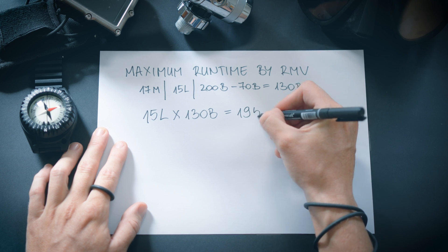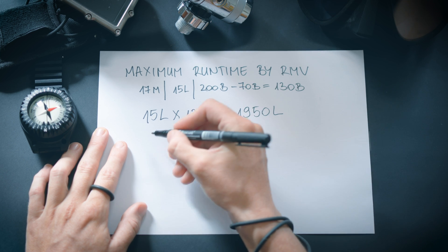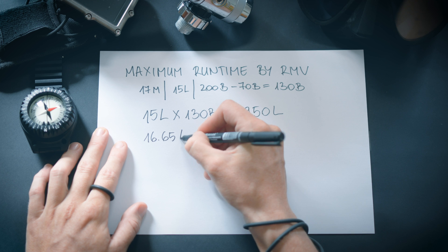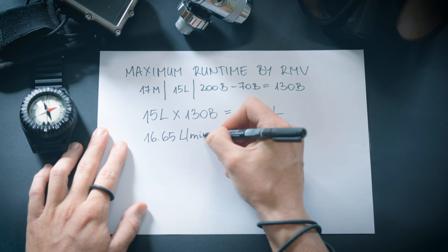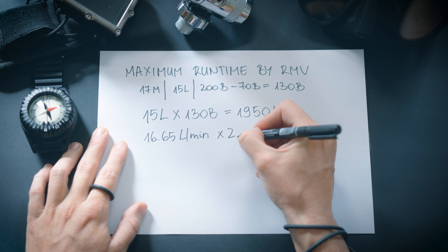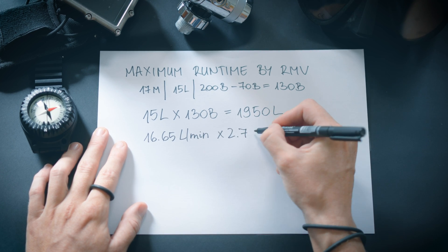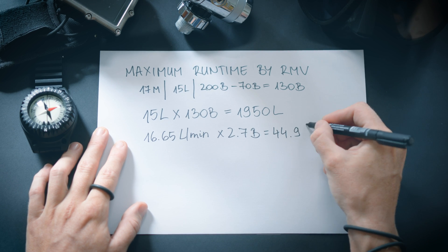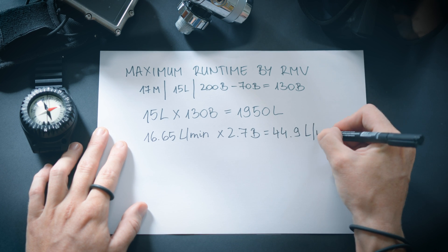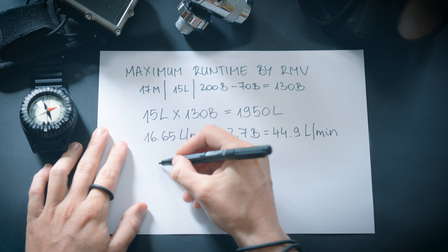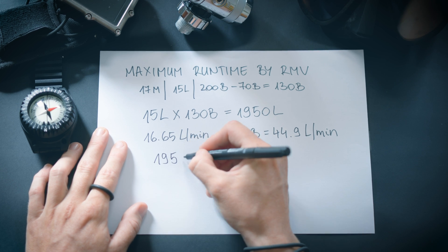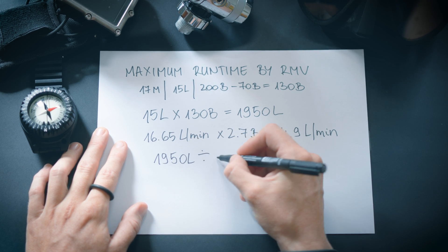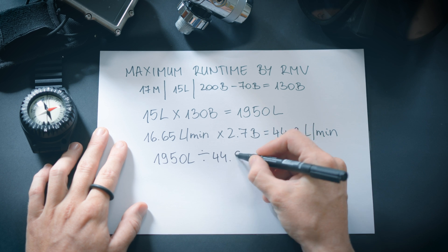To determine the RMV rate at depth, multiply the surface air consumption by the absolute pressure at the planned depth, which in this case is 2.7 bars. This indicates how much air we will consume at that depth per minute. To find out how long we can remain at 17 meters, simply divide the available gas by our RMV at depth. This calculation reveals that we have sufficient gas to stay at 17 meters depth for 43 minutes.